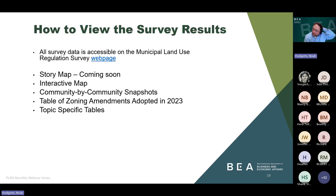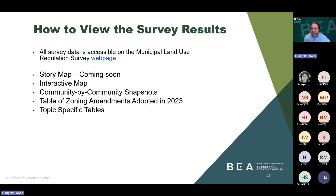There are several ways to interact with the survey results. There's a story map summarizing the results, coming soon on our website. There's an interactive map, which I'm going to do a brief tutorial of. There's a community-by-community snapshot. There's a list of zoning amendments adopted in 2023. And there are also topic-specific tables. All these different tools and data products are available right now on the Municipal Land Use Regulation Survey webpage, which is hyperlinked on this slide. We'll be sending out a copy of the slides after today's webinar, and the story map is the one item not yet available — we'll notify all registrants and attendees when it becomes available.